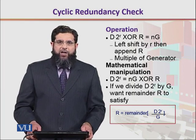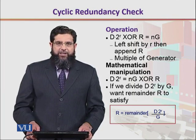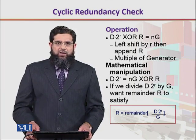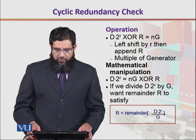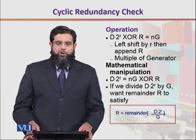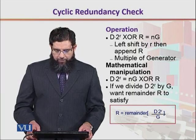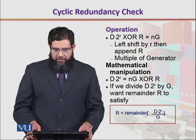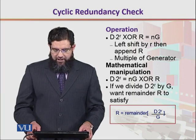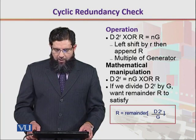Now let's try to understand the operation of CRC. We take d data bits and do a left shift operation by multiplying it with 2 to the power r. If the value of r is 2, then 2 to the power 2 is 4, so we perform a 4-bit left shift operation. Then we append it with R, where capital R is the redundant bits. This appending of redundant bits to the data bits should yield a multiple of the generator.